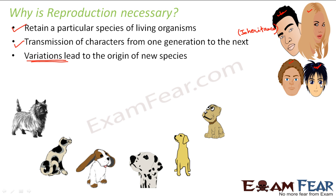That original dog reproduced — two dogs mated and reproduced — and maybe there was some small variation, like one of their children had big ears. When that dog reproduced later, maybe one of their children had big ears and also a spotted body color. As this process of reproduction keeps continuing, many new traits come up — like big ears, spotted color, or maybe a furry body covered with fur.